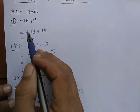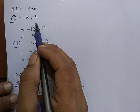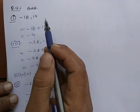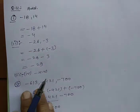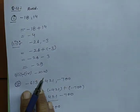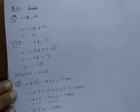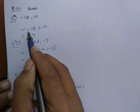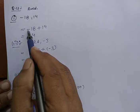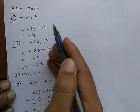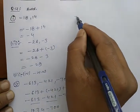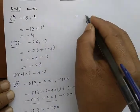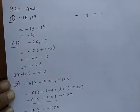First question is minus 18 plus 14. Two digits are given to add, minus 18 plus 14. Minus plus minus - if it is opposite sign then it is minus.